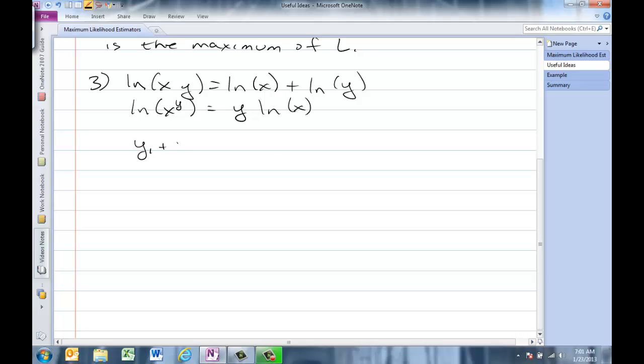Again, some notation. Y1, y2 plus yn, we use the summation notation. I goes from 1 to n, Y sub i. Product - Y1 times y2 through yn, it's a capital pi for product. This is a capital sigma, summation.